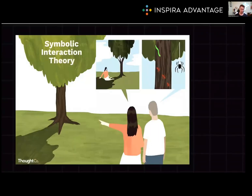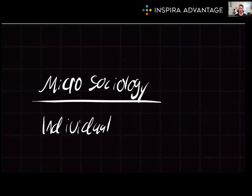Moving away from functionalism and conflict theory, we have symbolic interactionism. This is the study of the ways in which individuals interact through a shared understanding of words, gestures, and other symbols. For example, a handshake signifies agreement or trust between two individuals in many cultures — or at least before COVID it did. Now, to micro-sociology: this is the study of expressions, symbolic gestures, or other small individual components of a society, examining the nuances of everyday social interaction, such as how people convey politeness through body language and tone of voice. This contrasts with functionalism and conflict theory, which are macro-sociological theories.